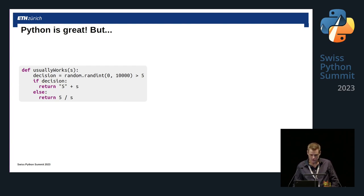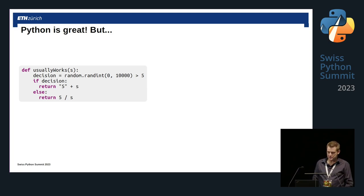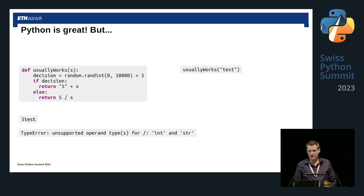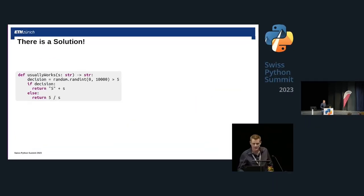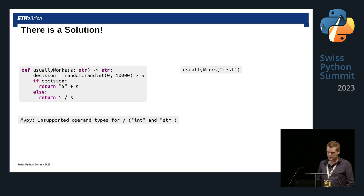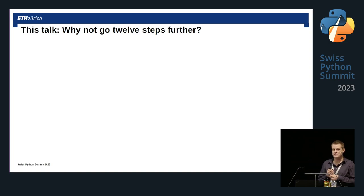Python is great, but there are some drawbacks, and one of them is static safety. Here's an example: I have a function that takes some s and then randomly, based on a random number, either appends s to a string or tries to divide five by s. If I call this with a string, usually it'll work fine, but sometimes I'll get a type error. In Java, this wouldn't happen, but in Python I can find out at runtime that I'm trying to run code that would not have compiled in other languages. There is a solution now — we have type hints. I can say s is supposed to be a string, and then if I run MyPy on this code, it'll tell me: what are you doing? You're trying to divide an int by a string. But why stop there and not go about 12 steps further?